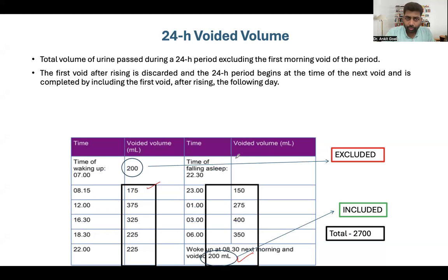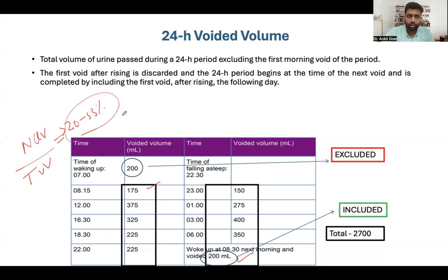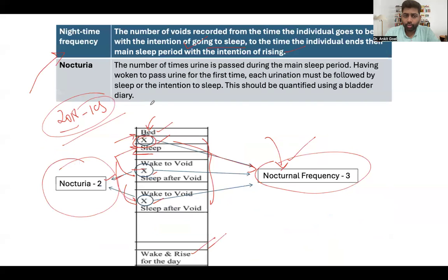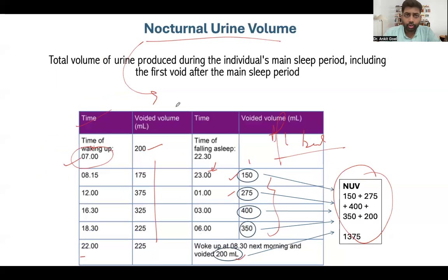If you know the ratio of nocturnal urinary volume divided by total voided volume, and it comes out more than 20–33%, this is defined as nocturnal polyuria: 20% in young adults, 33% in elderly. Always look at when the patient goes to bed and wakes up. Nighttime frequency and nocturnal polyuria are not the same — add up all nighttime volumes including the first void of the next morning to get nocturnal urinary volume, then divide by total urinary volume.